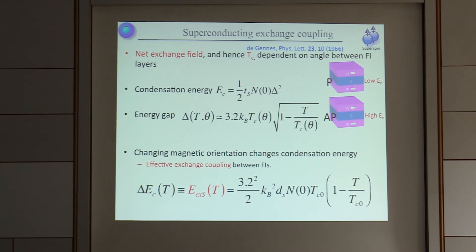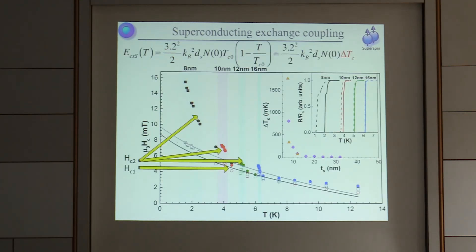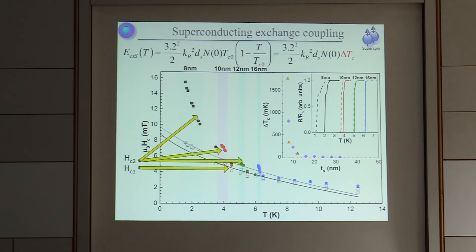The parallel state has a low condensation energy, and the anti-parallel state has a high condensation energy. Since condensation energies are negative, the anti-parallel state tends to be the energetically favorable one. This exchange energy term can be expressed in an equation dependent on the magnitude of delta Tc, so as delta Tc goes up with decreasing thickness, you'd expect this exchange energy term and hence the coercive field to go up much more rapidly. As you go through each of these transitions for the different thicknesses, the size of the effect progressively increases.